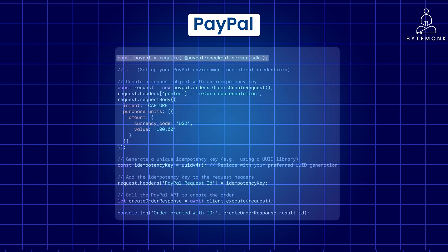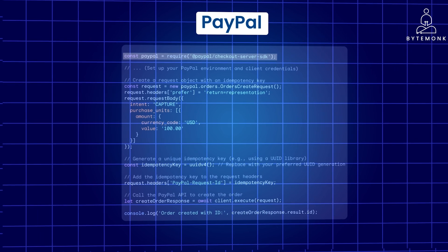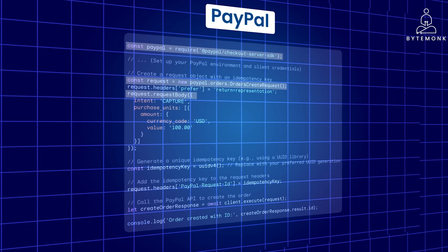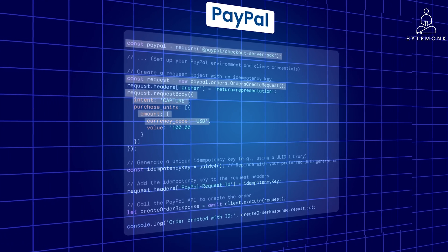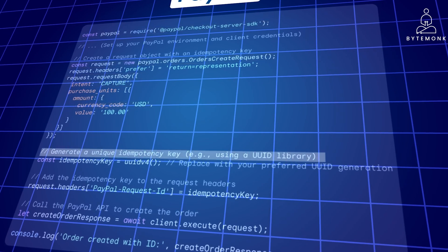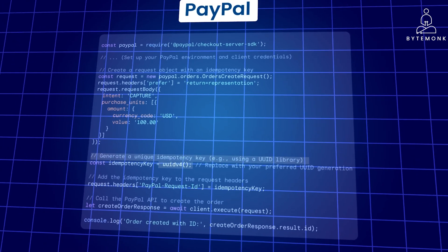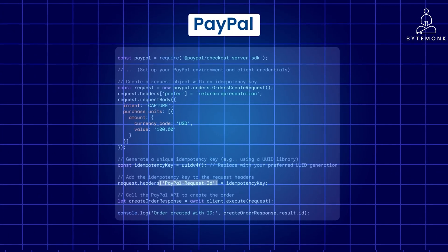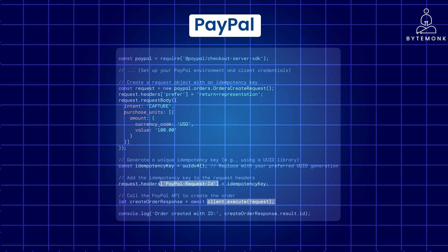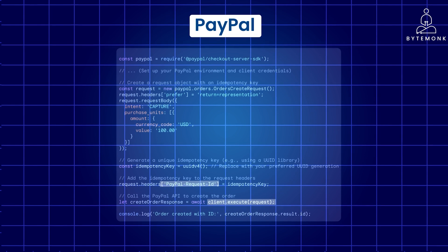The PayPal SDK is imported for easy interaction with the API. An order create request object is created to represent the payment creation request. The details of the payment — such as intent, amount, or currency — are defined in the request body. A unique idempotency key is generated, in this example using the UUIDv4 function from a UUID library. The PayPal-Request-ID header is then set to the generated idempotency key, and the client.execute method sends the request to the PayPal API including the idempotency key in the headers.